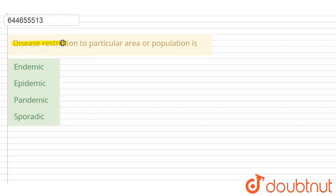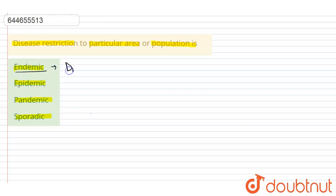Hello everyone. Here the question is: disease restriction to a particular area or population is known as what? The options are endemic, epidemic, pandemic, or sporadic. The first option is endemic.